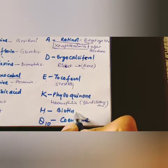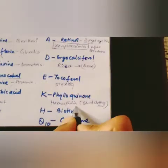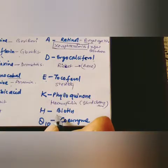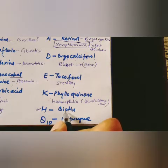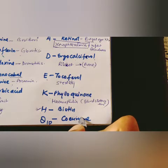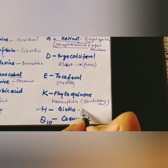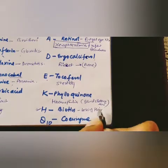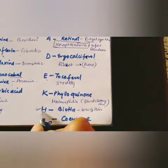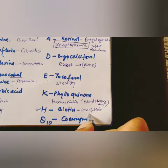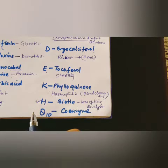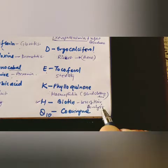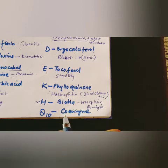Vitamin H is biotin. Sources include yeast, liver, kidney, and oils. Deficiency causes dermatitis, loss of hair, and paralysis due to nervous system effects. Coenzyme Q10 is found in chloroplasts of green plants and mitochondria of animals, and low levels reduce immunity against many diseases.